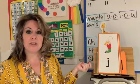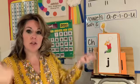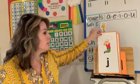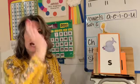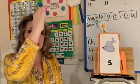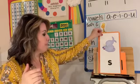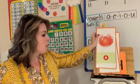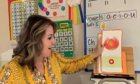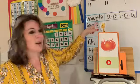The letter is J and the sound is juh, juh, juh. The letter is S and the sound is ss, ss, ss. The letter is O and the sound is ah, ah, ah, or O.